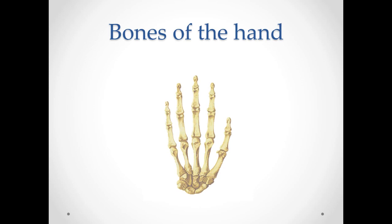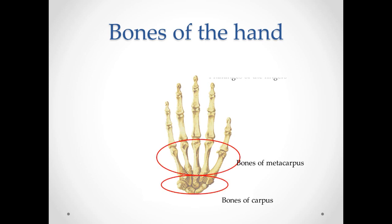The bones of the hand, ossa manus. They are divided into the bones of carpus, bones of the metacarpus, and bones of the fingers of the hand — the phalanges of the fingers.